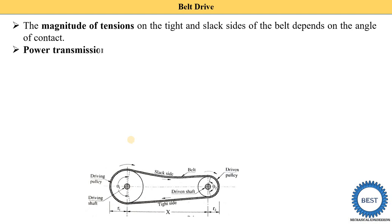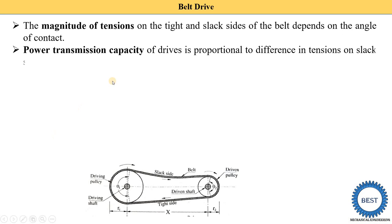A higher angle of contact means more tension is produced and more power is transmitted. The power transmission capacity of the drive is proportional to the difference in tension on the slack side and the tight side. The amount of power transmitted depends on this tension difference.